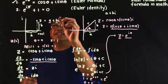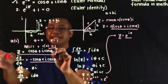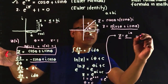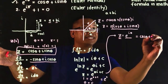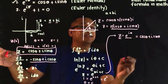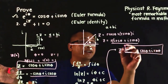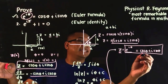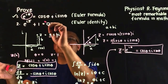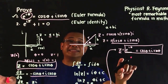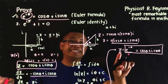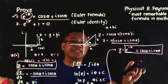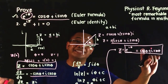So we now know the value of Z: it is E raised to iθ. But we also defined Z as cosine θ plus i sine θ. Therefore, E raised to iθ equals cosine θ plus i sine θ. At this point, we have just proven that any point on the complex polar plane, Z, can be represented as E raised to iθ, and that is also equal to cosine θ plus i sine θ — the Euler formula.